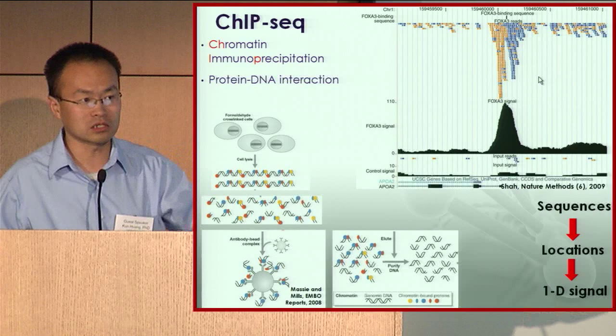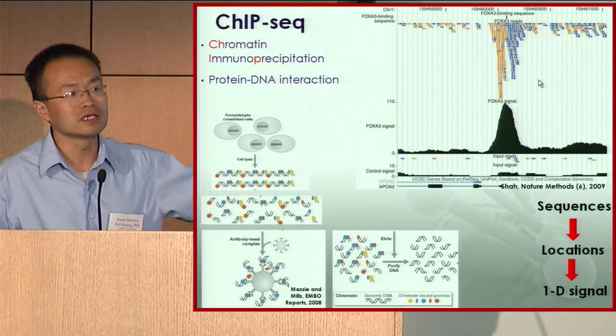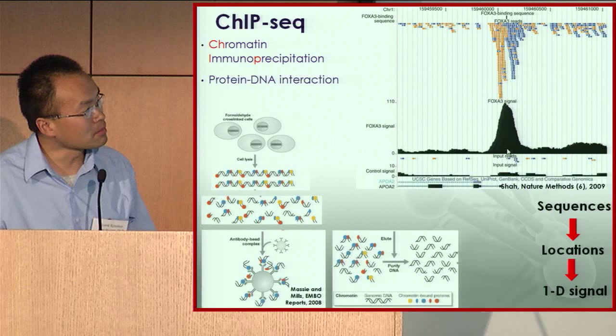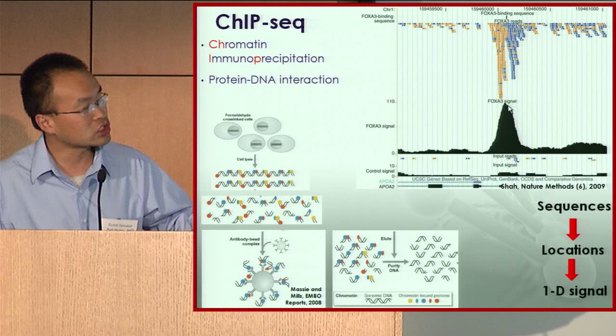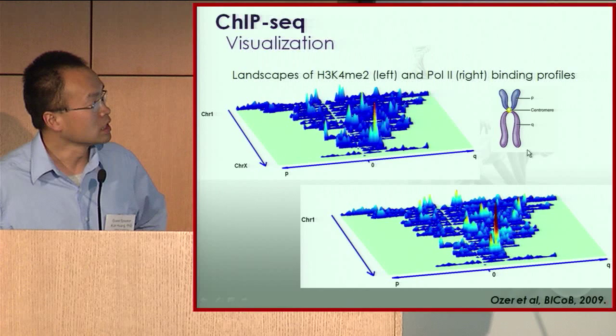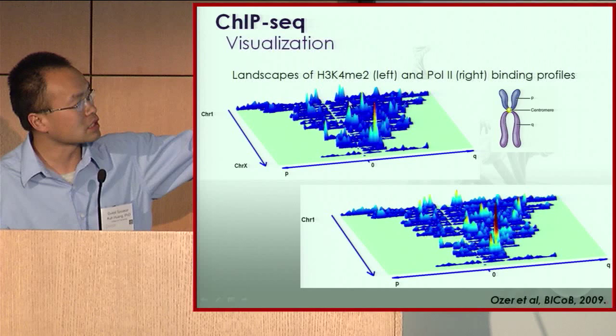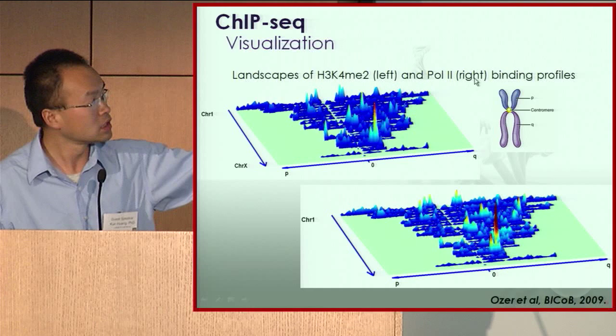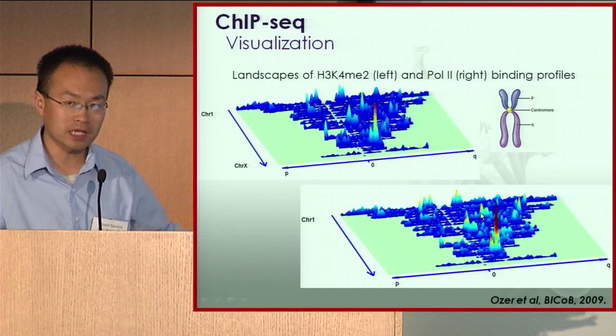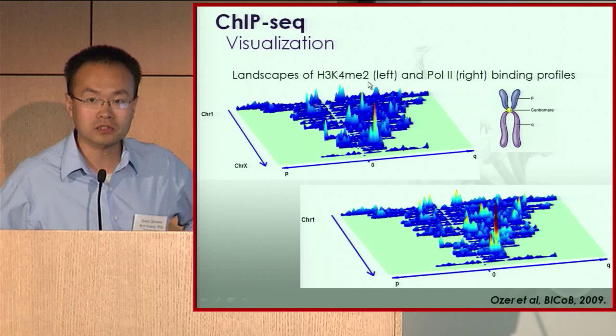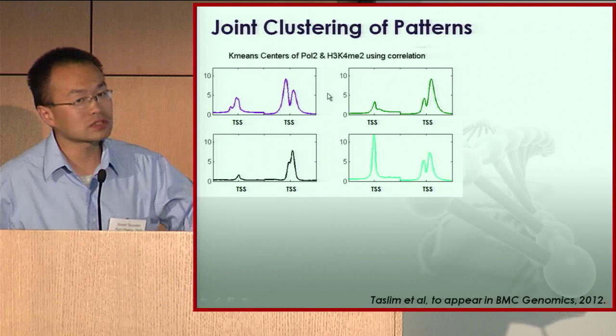Once you transform sequences into a one-dimensional signal, engineers familiar with radar detection or speech recognition recognize this — people have been doing peak detection in one-dimensional signals for 60 years. Moreover, because the technology is so accurate, it's not just the quantity that matters — even the shape of the binding contains a lot of information. This gives a global 3D view of binding patterns for every chromosome. For example, looking at a promoting histone mark and RNA polymerase II for transcription, the global binding patterns are very similar — not surprising, since H3K4 dimethylation promotes transcription.